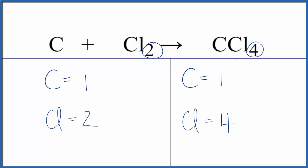Let's put a coefficient of two in front of the Cl₂. Two times two gives us four. Now that these numbers are the same, we've balanced this equation.